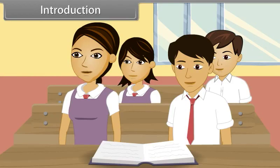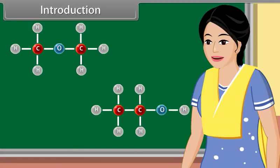What is reaction mechanism? Reaction mechanism is a sequence of steps during which chemical reactions occur. In this lesson, you will learn isomers and fundamental concepts in organic reaction mechanisms.